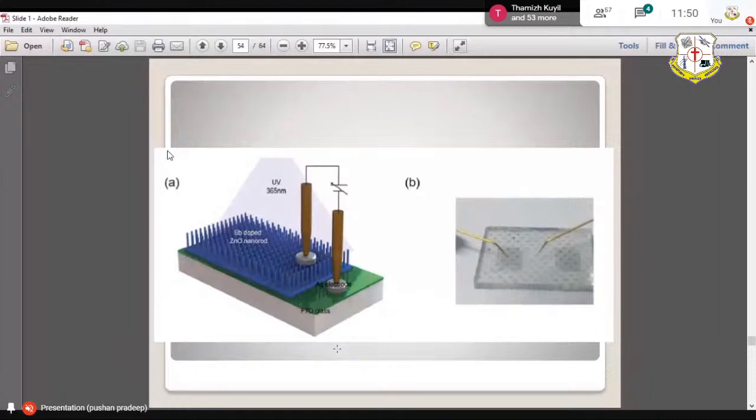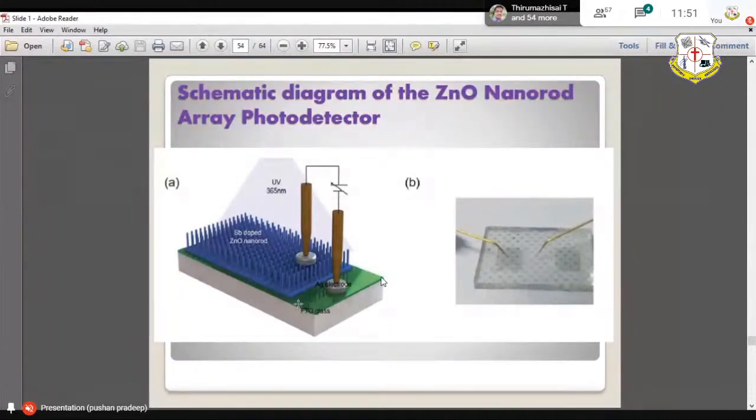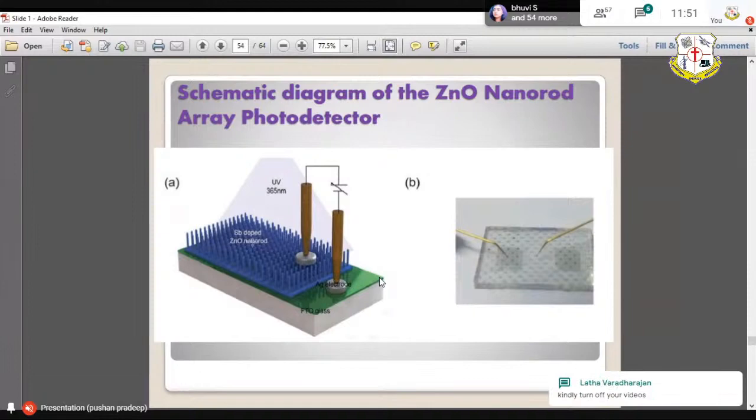Here you can see different layers - FTO glass, on the FTO glass we coat titanium dioxide or any other layer. On the top we coat zinc oxide nanorods and we take a lead with silver contact or even gold contact. We take a lead in between the FTO and zinc oxide nanorod, it may be doped or undoped.